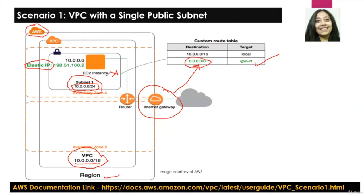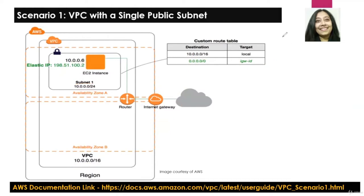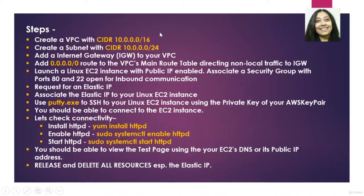Let me clear all the drawings. For the ease of anyone who wants to follow this video later and create their own VPC, I have enlisted all the steps right here. Feel free to pause the video whenever you want to create this scenario and follow these steps, all the way until you associate the elastic IP to your Linux EC2 instance.